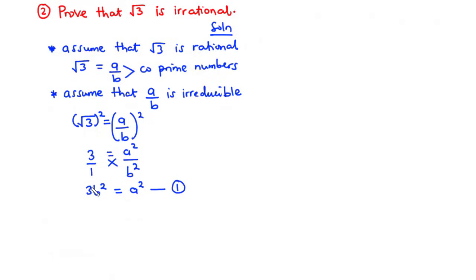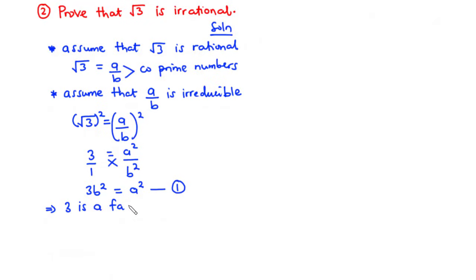At this point, we have 3 times a certain integer value b squared, and that is equal to a squared. So, 3 times a certain integer value b squared equals a squared tells us that 3 is a factor of a squared, because 3 times a certain value is equal to a squared.